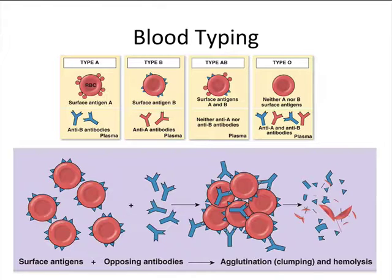If you were to take type B blood and stick it into a type A person who has anti-B antibodies, those antibodies would recognize those antigens and trigger agglutination and the complement cascade, leading to destruction of those cells — a process called hemolysis.